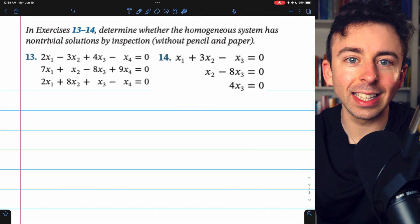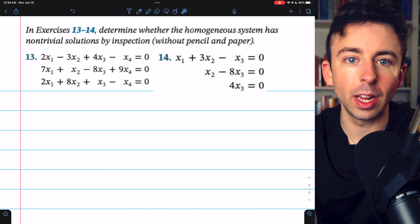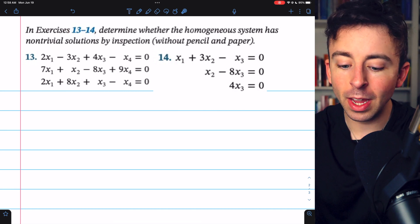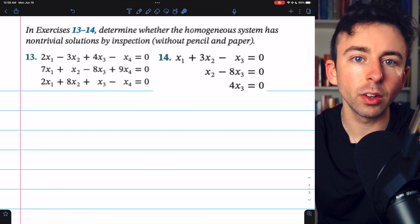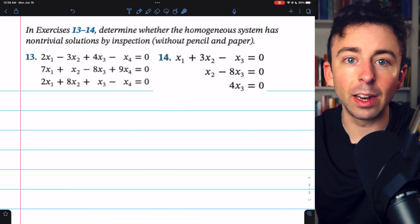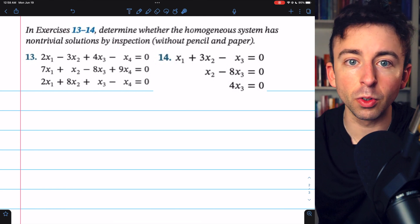Link in the description if you want to buy the book. It's great. In these first two exercises, we want to determine whether the homogeneous system has non-trivial solutions by inspection, which means we should just be able to look and figure out if it has non-trivial solutions or not.